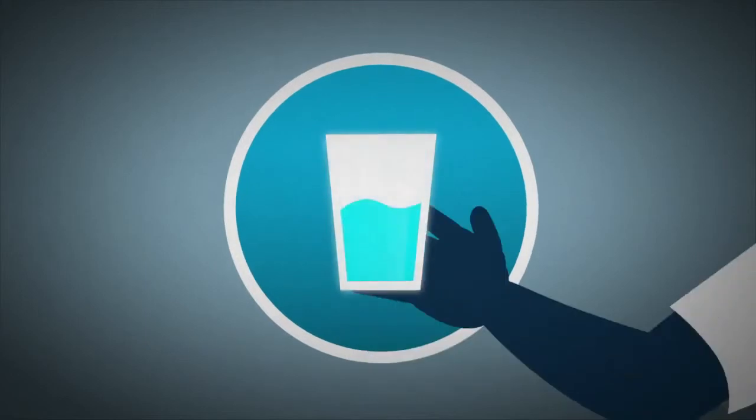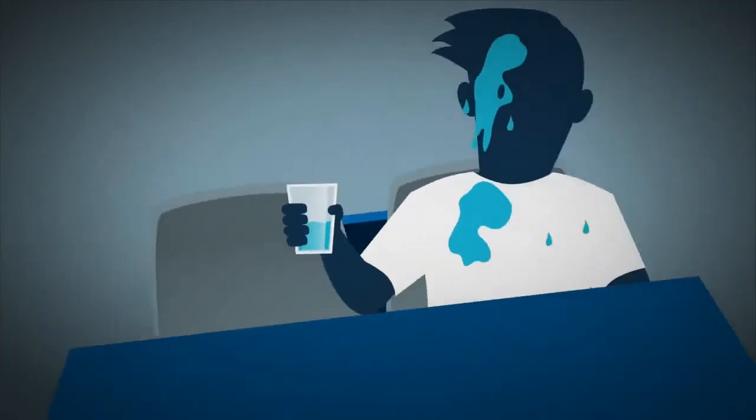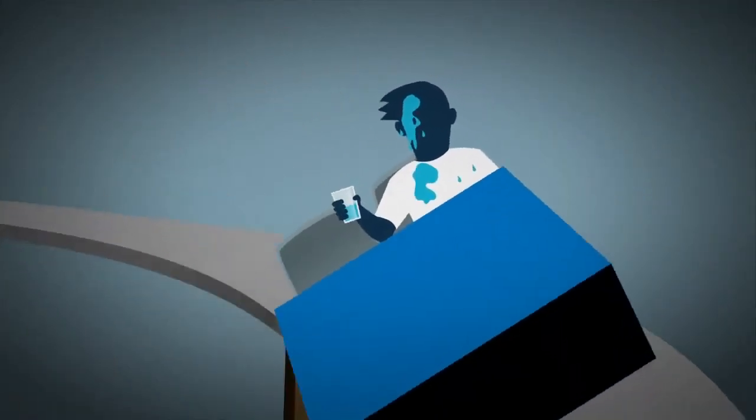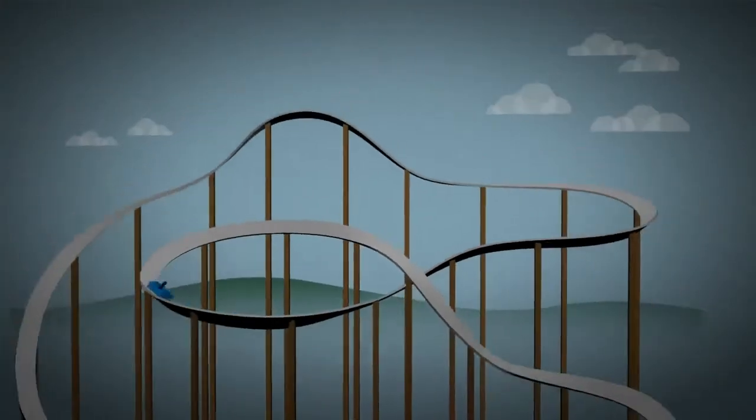To understand linearity, think about how it feels to get tossed around in a roller coaster. Being lurched and jerked around may be fun on an amusement park ride, but you wouldn't want this in a car.